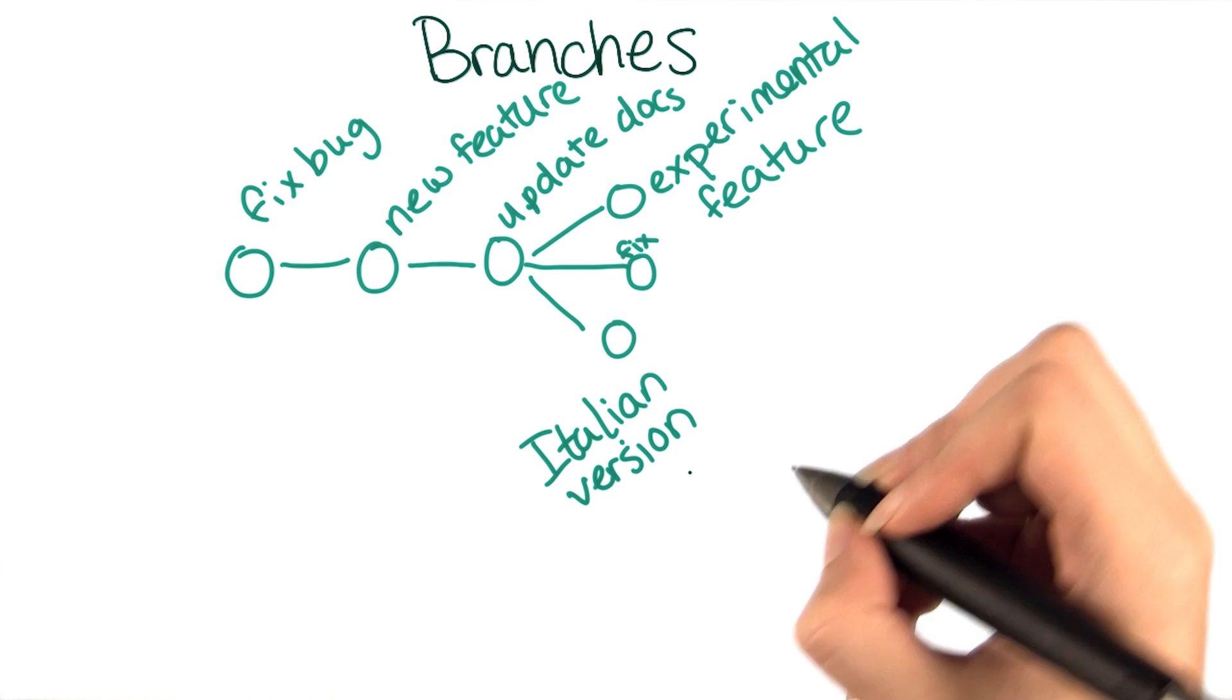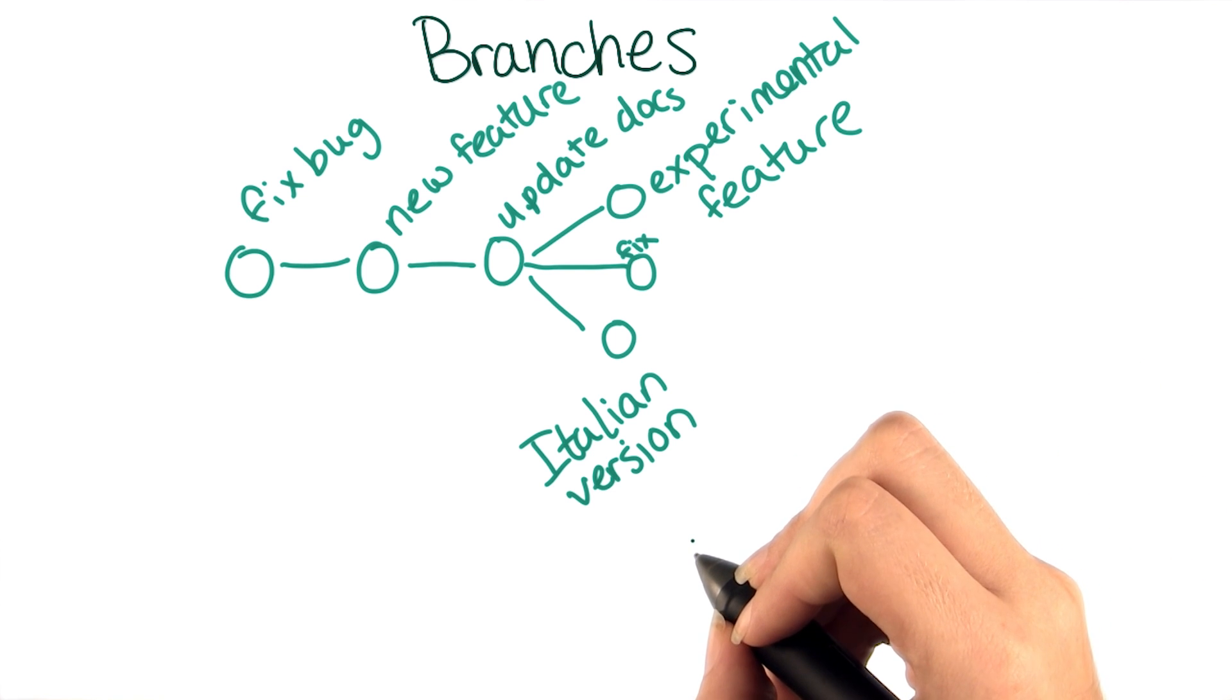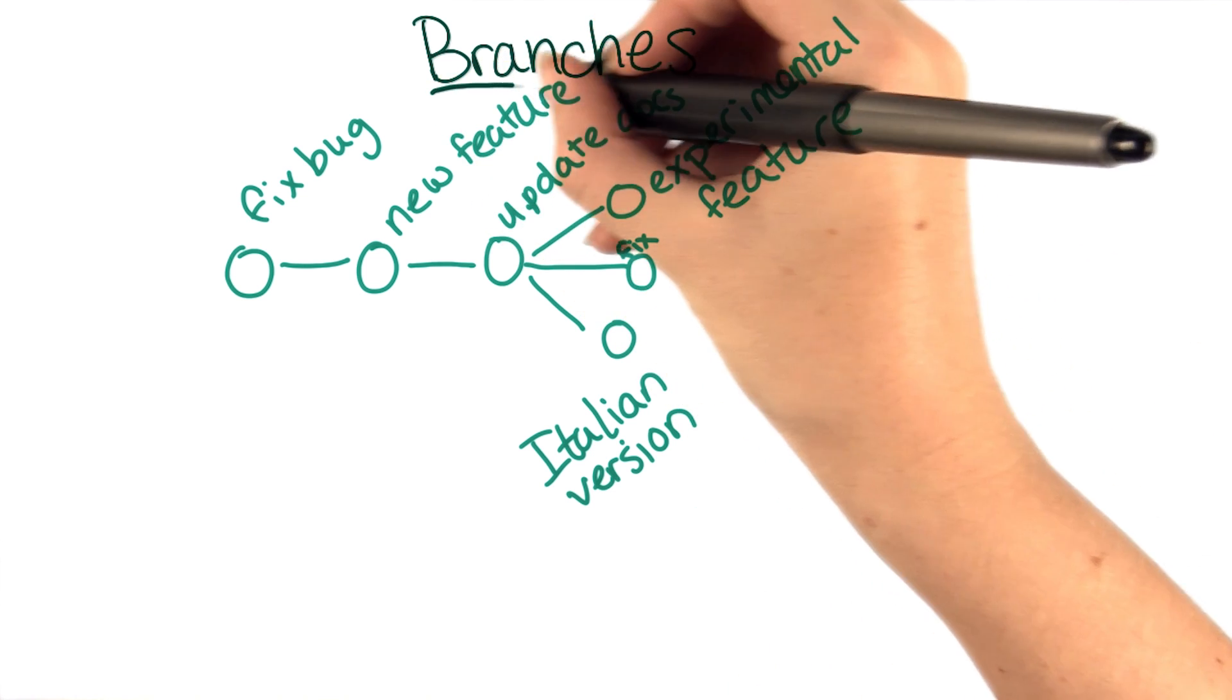To make this kind of situation easier, git allows you to create labels for your commits. These labels are called branches.